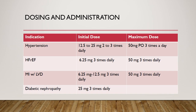Dosing of Captopril may differ depending on its indication. For the treatment of hypertension, initial dosing ranges from 12.5 mg to 25 mg 2 to 3 times a day. For patients with heart failure with reduced ejection fraction, initial dosing is 6.25 mg 3 times a day. To improve survival following myocardial infarction in clinically stable patients with left ventricular dysfunction, initial dose is 6.25 mg by mouth once, as early as 3 days post-myocardial infarction, followed by 12.5 mg orally 3 times a day. For patients with diabetic nephropathy in type 1 insulin-dependent diabetes with retinopathy, initial dose is 25 mg 3 times a day. The maximum dose is 50 mg by mouth 3 times a day for most indications.